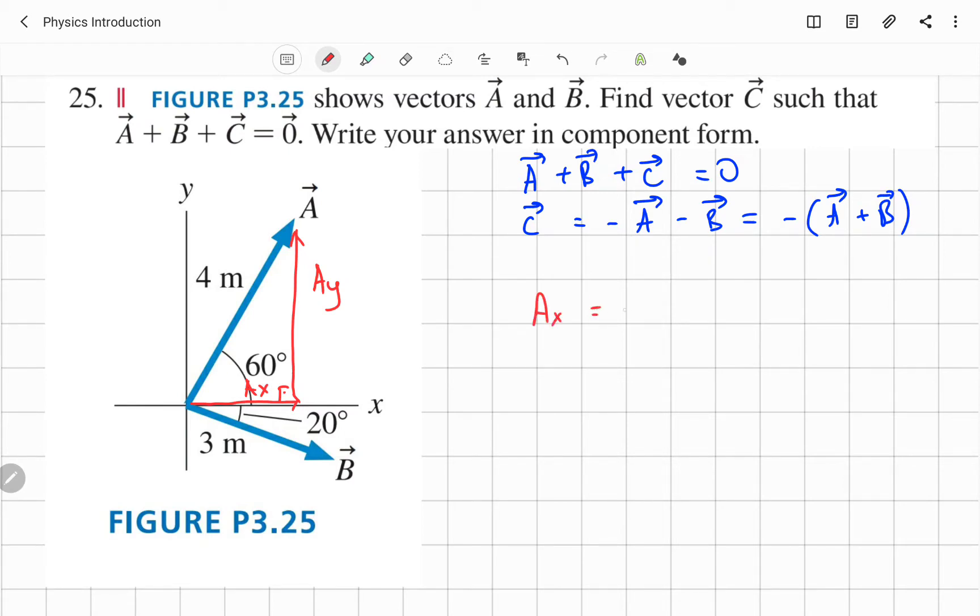So Ax equal to A times cosine 60 basically. 4 times cosine 60, which will give us 2, I think. Yes, 2 meters, exactly. 2 meters.